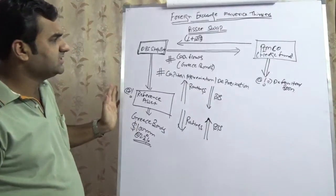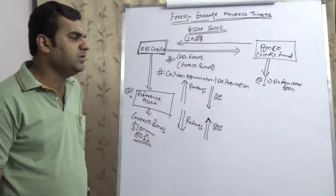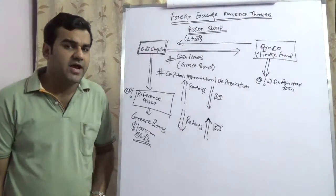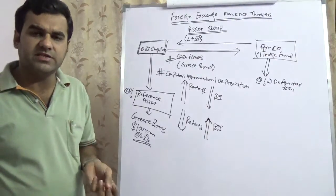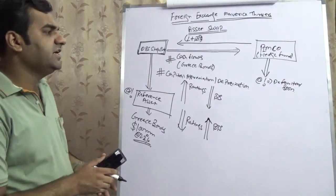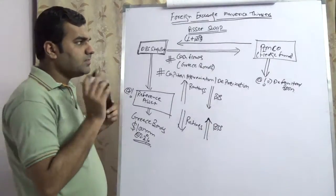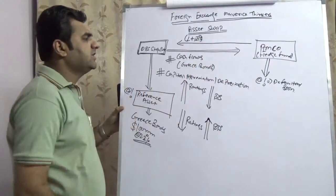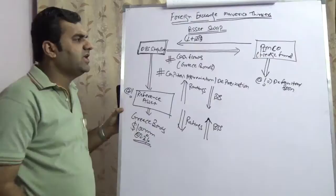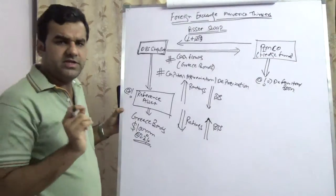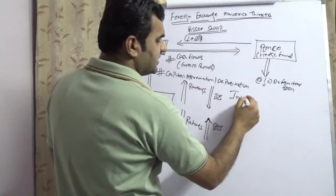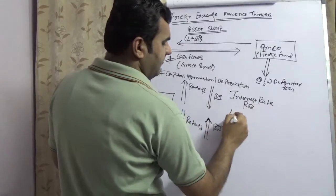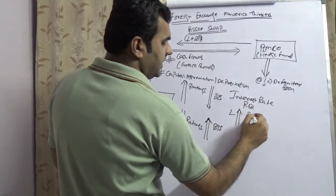This creates a simplistic structure of asset swap. There could be various kinds of asset swap in which you can have capital depreciation, and one more phase of asset swap which we are going to cover in the next video, which is basically interbank hedging. PIMCO is paying LIBOR plus a few basis points to DBS Singapore. Now PIMCO holds a risk known as interest rate risk.